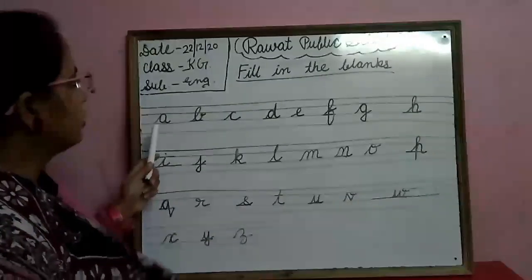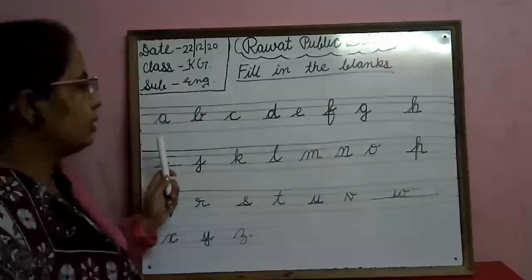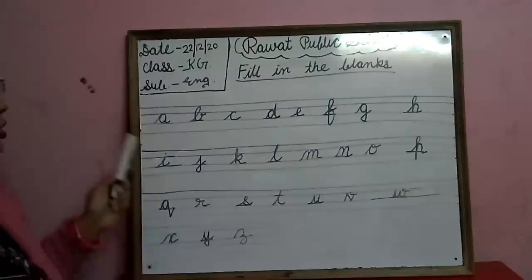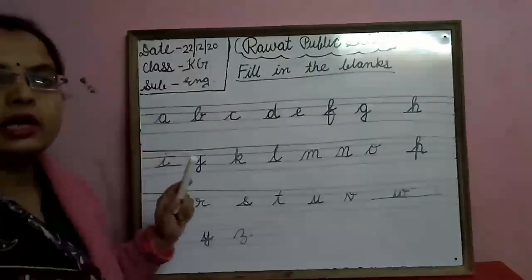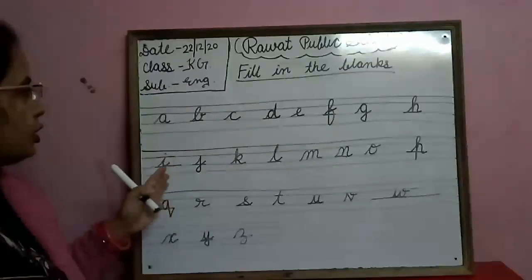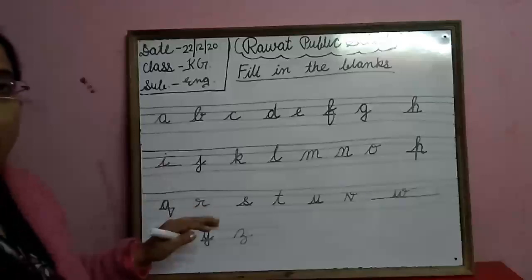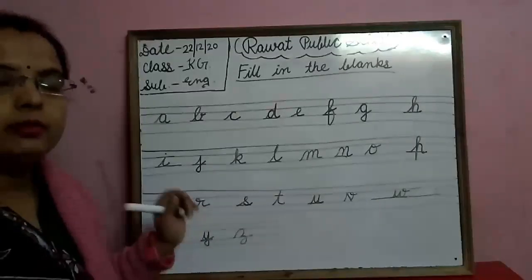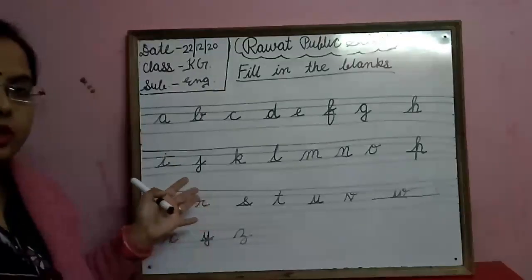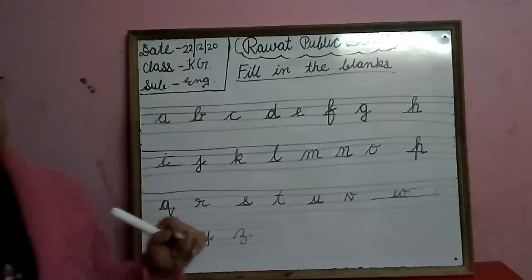Okay? So, this is a fill in the blanks. Okay? जहाँ नीचे मैंने अंडरलाइन किये वहाँ आपको लिखना है. So, do this work with the help of your parents. आपके parents आपको नोटबुक में, इंग्लिश नोटबुक में ये fill in the blanks करके देंगे. आपको जहाँ नीचे अंडरलाइन है, blank है वहाँ पर आपको लिखने है. Okay? This is your homework for the revision work. Thank you.